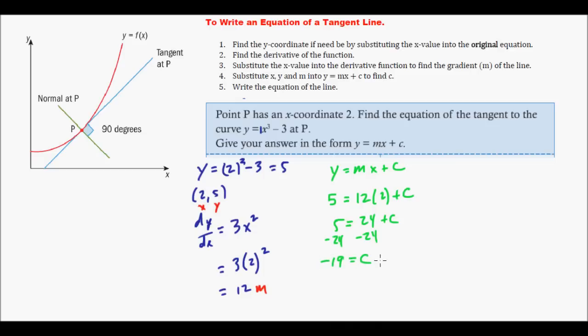Once you have c and you have m, we can write the equation. If we're going to write the equation, it's going to be y equals 12x minus 19. So there you go, that's how you write a tangent line.